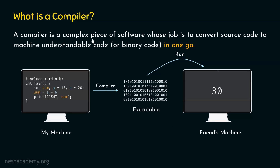A compiler is a complex piece of software whose job is to convert source code to machine code in one go. Compiler takes the source code and converts it to machine code or binary code in one go. We have learned this statement already in the last presentation and we have understood it with the help of an example.